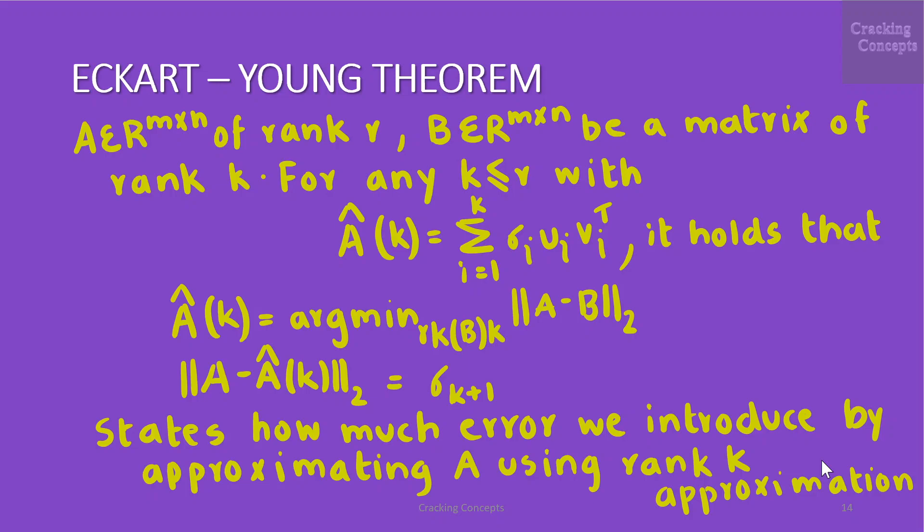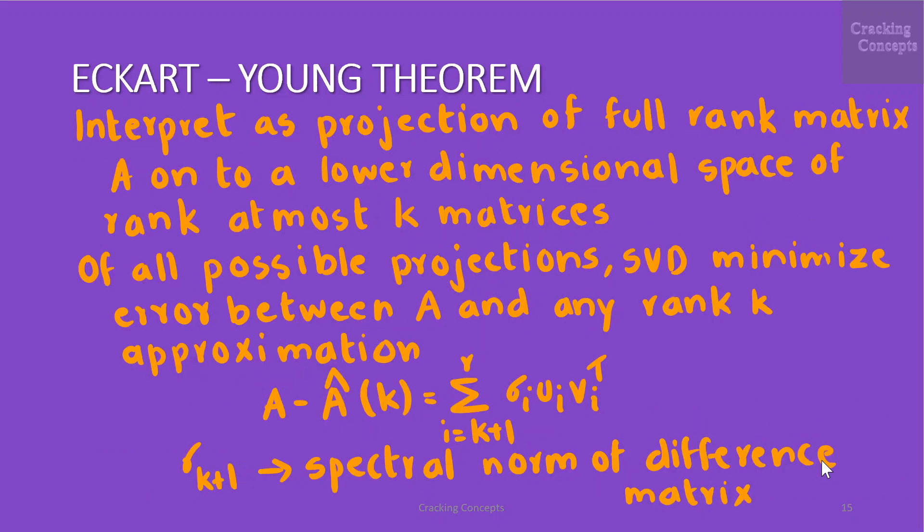The Eckart-Young theorem states explicitly how much error we introduced by approximating A using a rank K approximation. We can interpret the rank K approximation obtained with the SVD as a projection of the full rank matrix A onto a lower dimensional space of rank at most K matrices. Of all the possible projections, SVD minimizes the error between A and any rank K approximation.